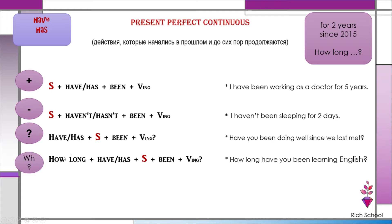How long have you been doing something? 'I have been working as a doctor for five years.' 'I haven't been sleeping for two days.' 'Have you been doing well since we last met?' After 'since,' you use past simple — since Monday, or since some event. How long have you been learning English?